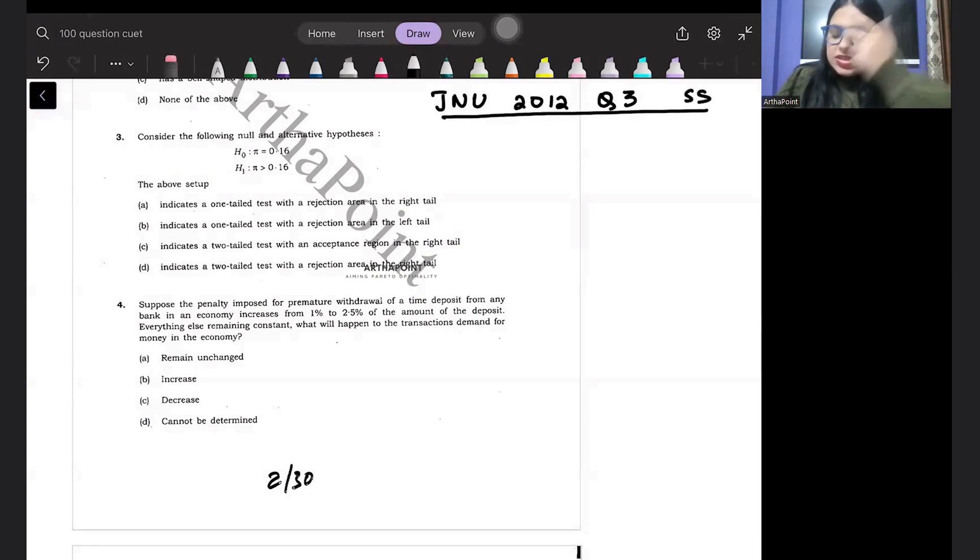Read the question. It says consider the following null and alternative hypothesis. The null hypothesis given to you is π is equal to 0.16. And the alternative hypothesis given is π greater than 0.16.